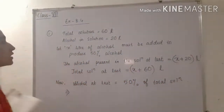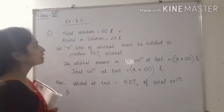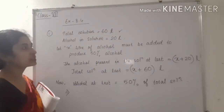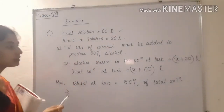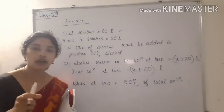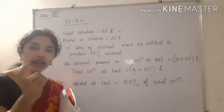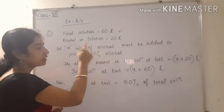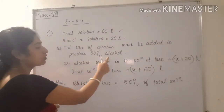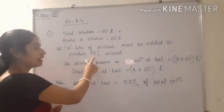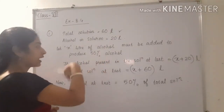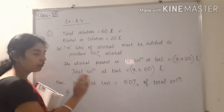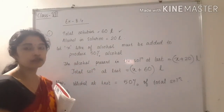First, write the given conditions. The total solution is 60 litres. Alcohol present in the solution is 20 litres. We have to find the amount of alcohol which must be added so that finally 50% of the solution contains alcohol. Let x litres of alcohol be added; after adding x litres, the alcohol present at last should be 50% of the total solution.